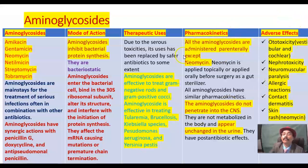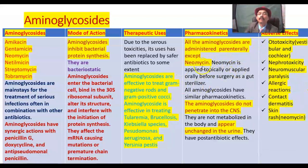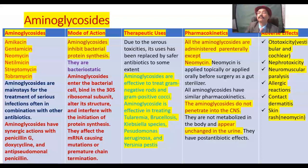Pharmacokinetics: all aminoglycosides are administered parenterally, either by intravenous or intramuscular route. Only neomycin is applied topically or administered orally before surgery as a gut sterilizer. All aminoglycosides have similar pharmacokinetics. They do not penetrate the central nervous system and cannot cross the blood-brain barrier. They are not metabolized in the body and appear unchanged in the urine. They have a post-antibiotic effect, so although their blood level decreases, they remain effective antibiotics — that is why they may be applied as once-daily dose therapy.